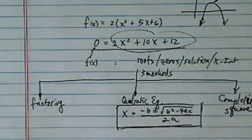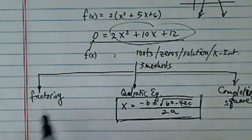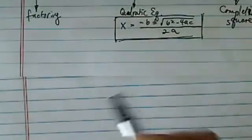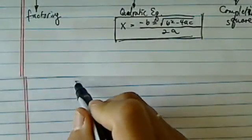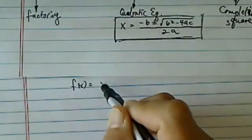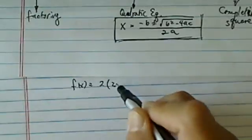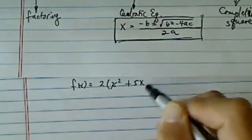Let's go through method one: factoring. We have a relatively easy one to factor. We have f(x) = 2(x² + 5x + 6). We'll pull the 2 out.